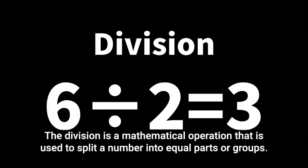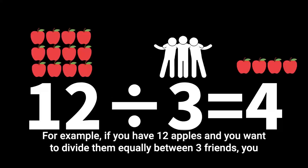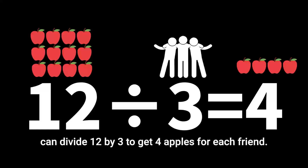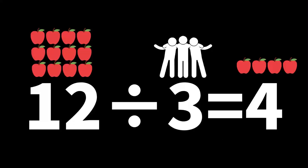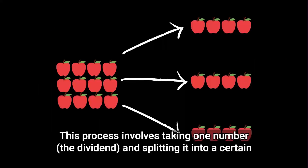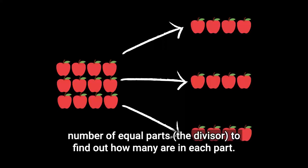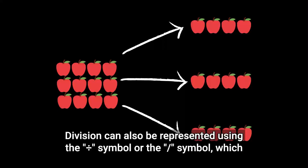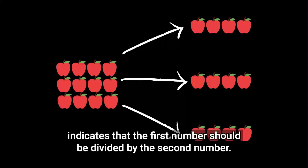Division is a mathematical operation that is used to split a number into equal parts or groups. For example, if you have 12 apples and you want to divide them equally between three friends, you can divide 12 by 3 to get four apples for each friend. This process involves taking one number and splitting it into a certain number of equal parts to find out how many are in each part. Division can also be represented using the divided-by symbol, which indicates that the first number should be divided by the second number.